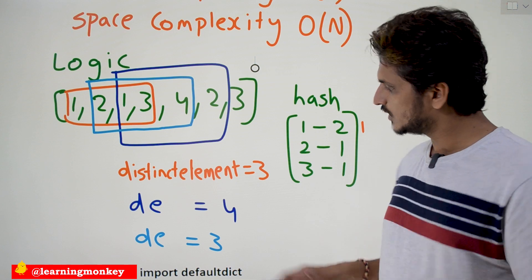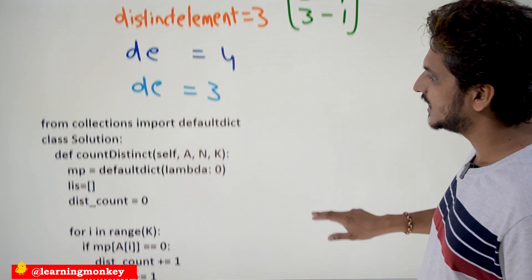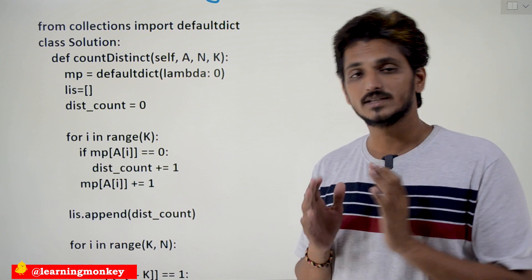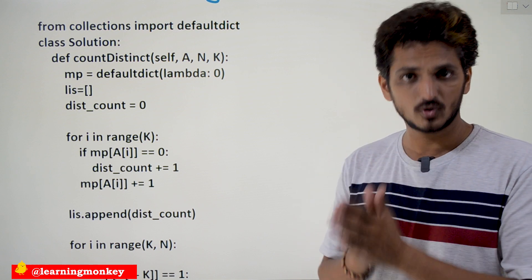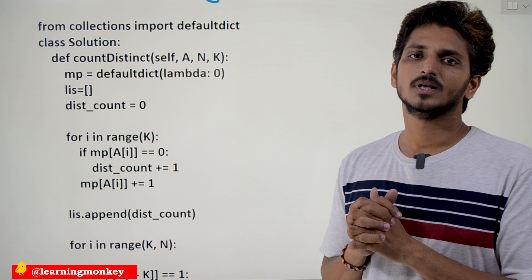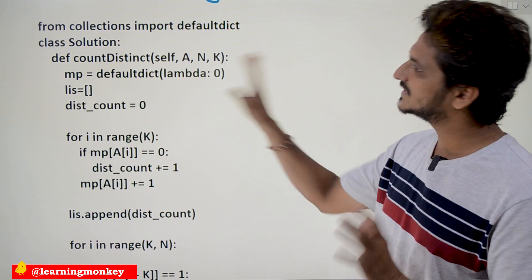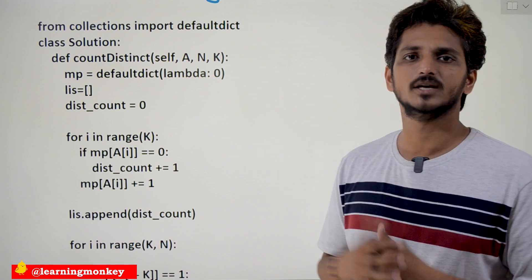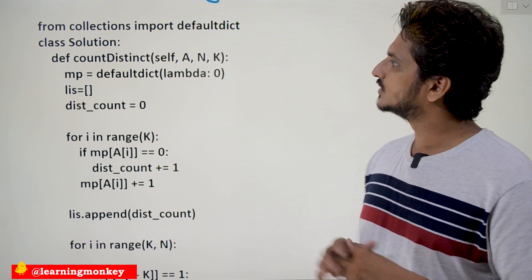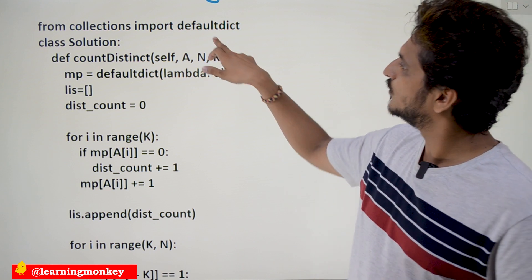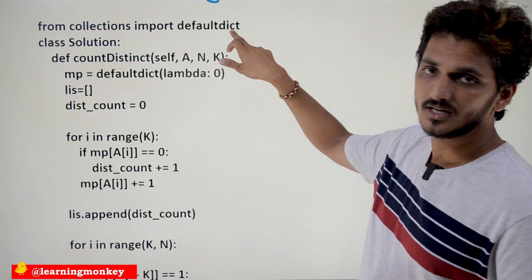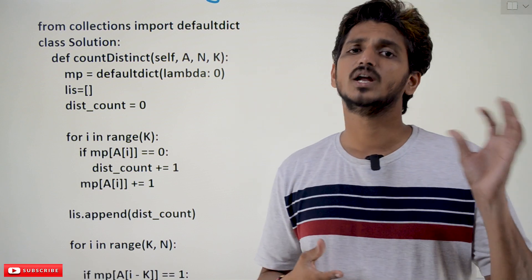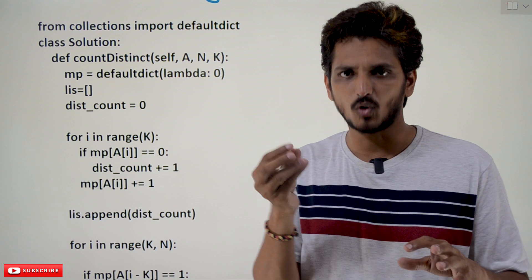Anyhow, we are going to show you the code here. Our suggestion is: by listening to the explanation, try to solve the example on your own — that is the best practice. The coding is available on our website learningmonkey.in; you can copy the code and execute it. We are using a default dictionary class, but without using it also, you can do it with some modifications.